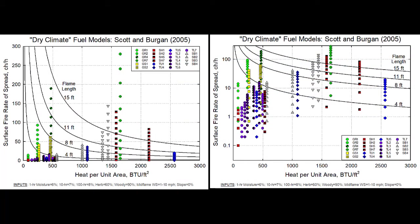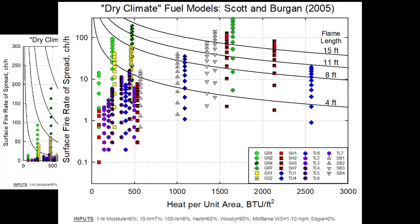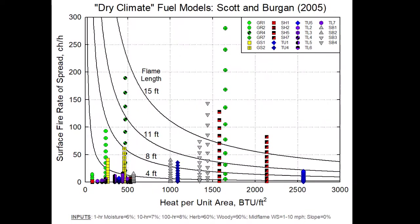Now you can compare your fire behavior to the fuel model comparison graph. The graph you select will depend on the fire behavior you are seeing. If you have lower rates of spread and lower fire behavior, choose a figure that has those values spread out, paying attention to the y-axis values. If fire behavior is higher with higher rates of spread and flame lengths, choose a figure where you can still see that information clearly.